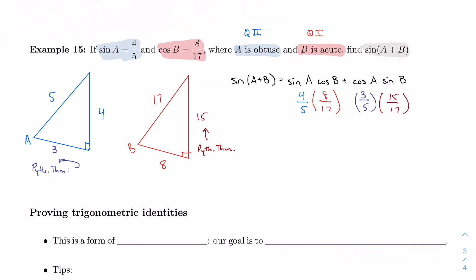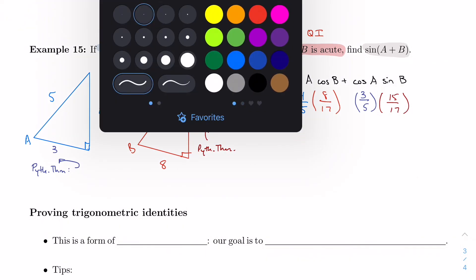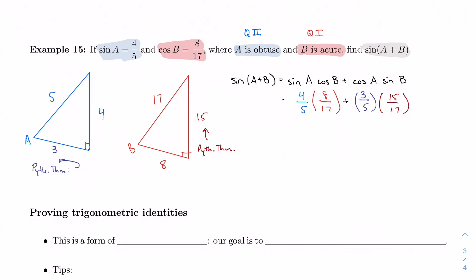And now I have everything I need. I've got all the parts that I need. I can just multiply these all together. Let's see. 5 times 17 is 85. 4 times 8 is 32. Plus 45. So I get 77 over 85. And I don't believe that that simplifies. So there's my value of sine of A plus B.